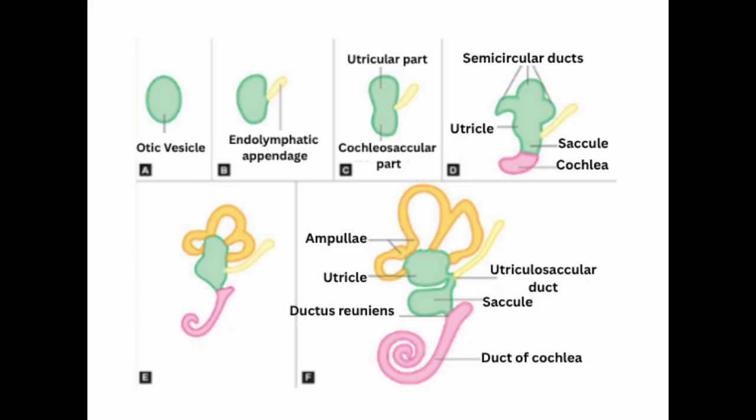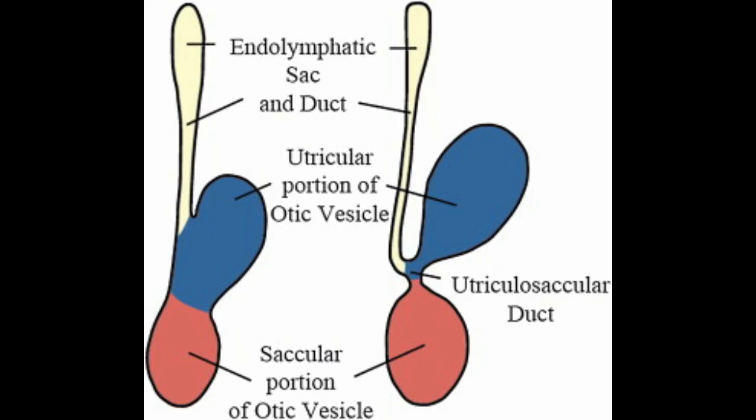From the ventral saccular component, the tubular cochlear duct is formed by the sixth week. This cochlear duct grows and spirals two and a half times, forming the membranous cochlea. The saccule connects to the utricle via a duct called the ductus reuniens. The membranous labyrinth includes a saccular portion, a utricular portion, the endolymphatic sac, the endolymphatic duct, the utricular-saccular duct, and the ductus reuniens.